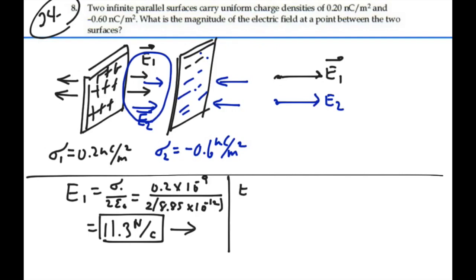The other field, E2, is going to be equal to sigma2 over 2 epsilon0. And sigma2 is a negative 0.6 nanocolumns per meter squared, but I've already determined the direction of it, so I just need the magnitude of this field. So it's 0.6 times 10 to the minus 9 coulombs over 2 times 8.85 times 10 to the minus 12.